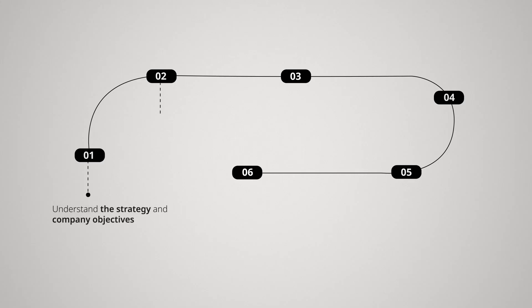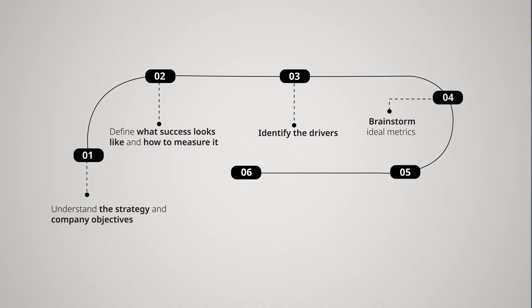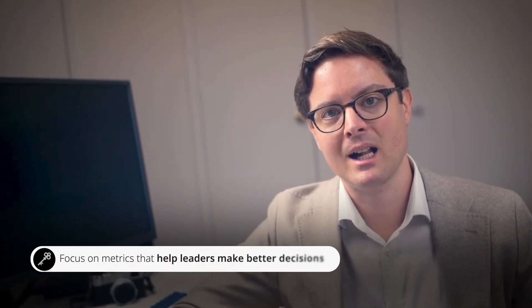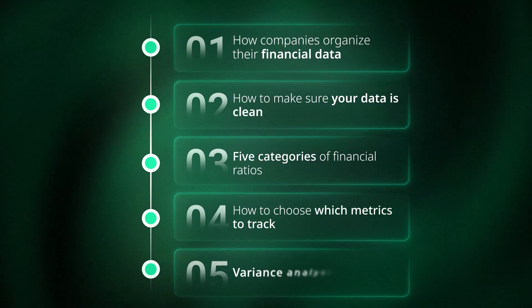I teach a six-step process for this. Step one: understand the strategy and company objectives. Step two: define what success looks like and how you'll measure it — sometimes this is easy, like measuring revenue per sales rep, but sometimes it's harder, like measuring long-term brand building. Step three: identify the drivers that need to be true to achieve these objectives. Step four: brainstorm your ideal metrics without worrying about data availability yet — separate the brainstorming phase from the feasibility phase so you don't eliminate good metrics too early. Step five: evaluate data availability and implementation feasibility. Step six: align on the final metrics you're moving forward with. The key is to focus on metrics that help leaders make better decisions.